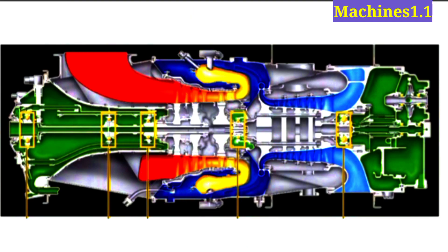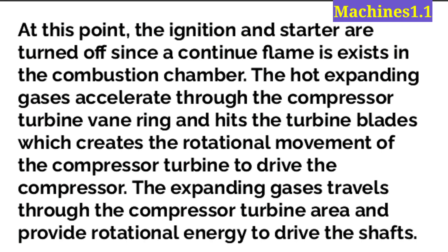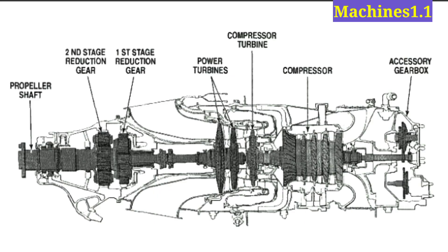At this point the engine is called self-sustained, because the starter generator cuts off and all rotating power is taken from the turbines, which are driven by the hot gases produced by the combustion chamber. The ignition and starter are then turned off. Since a continuous flame exists in the combustion chamber, the expanding gases accelerate through the compressor turbine vane ring, hit the turbine blades, and create rotational movement of the compressor turbine to drive the compressor.